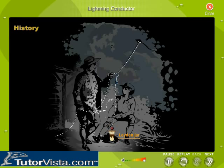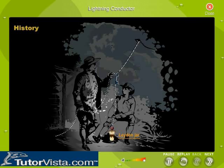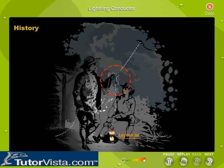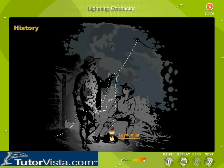Franklin, however, was unaffected by the negative charges because he was holding a dry silk string which insulated him from the charges on the key. When Franklin reached out his knuckle to touch the key, he received a shock because the negative charges in the key were so strongly attracted to the positive charges in his body that a spark jumped from the key to his hand. Franklin's experiment successfully showed that lightning was actually static electricity.